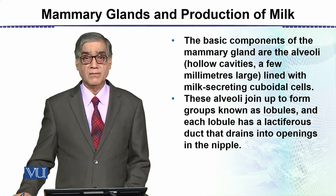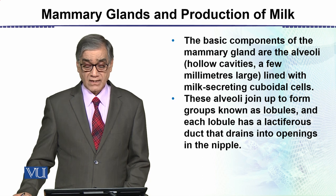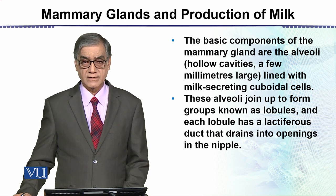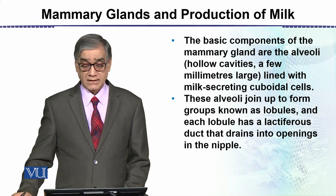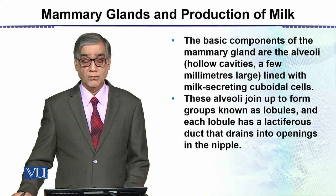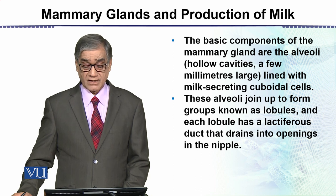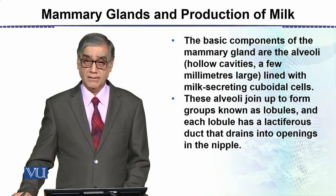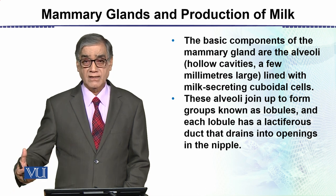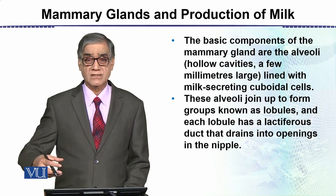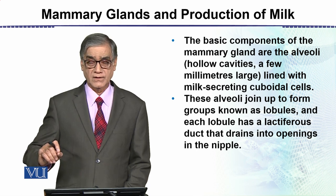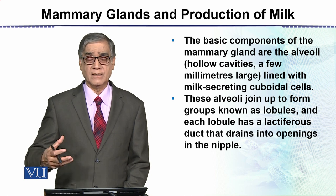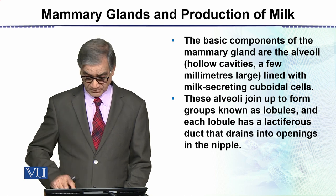The basic components of the mammary gland are the alveoli, which are hollow cavities a few millimeters large, lined with milk-secreting cuboidal cells, as shown in the diagram. These alveoli join up to form groups known as lobules, and each lobule has a lactiferous duct that drains into the opening in the nipple, from which milk flows out.